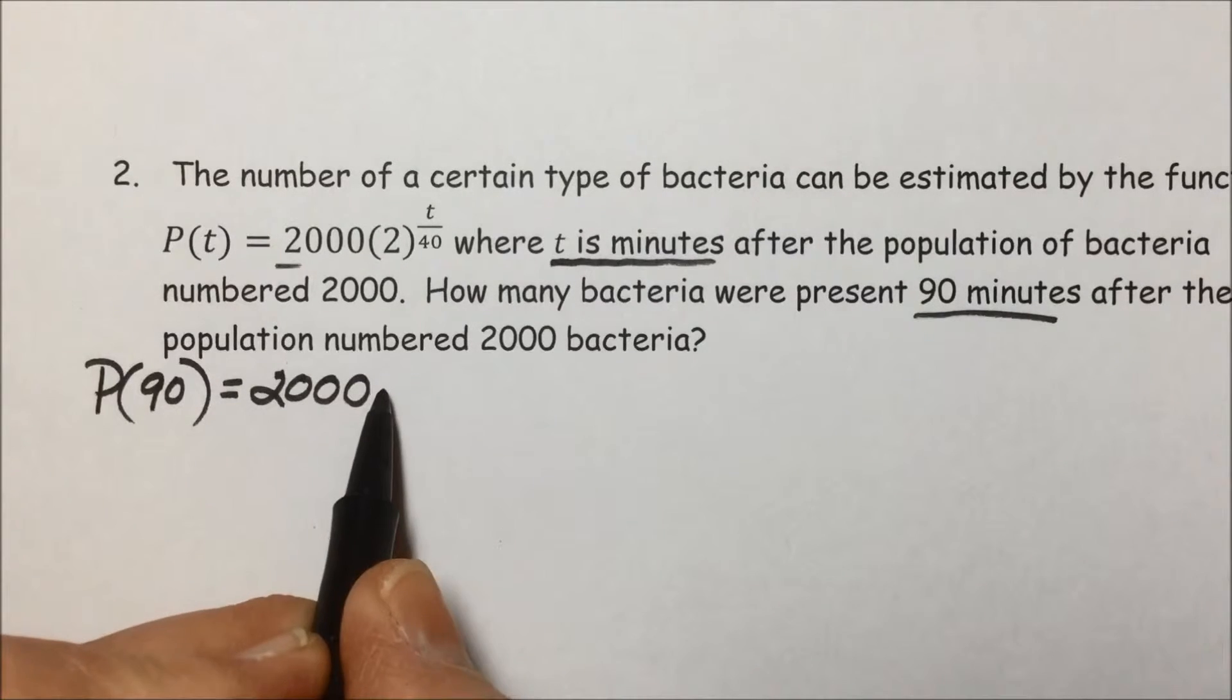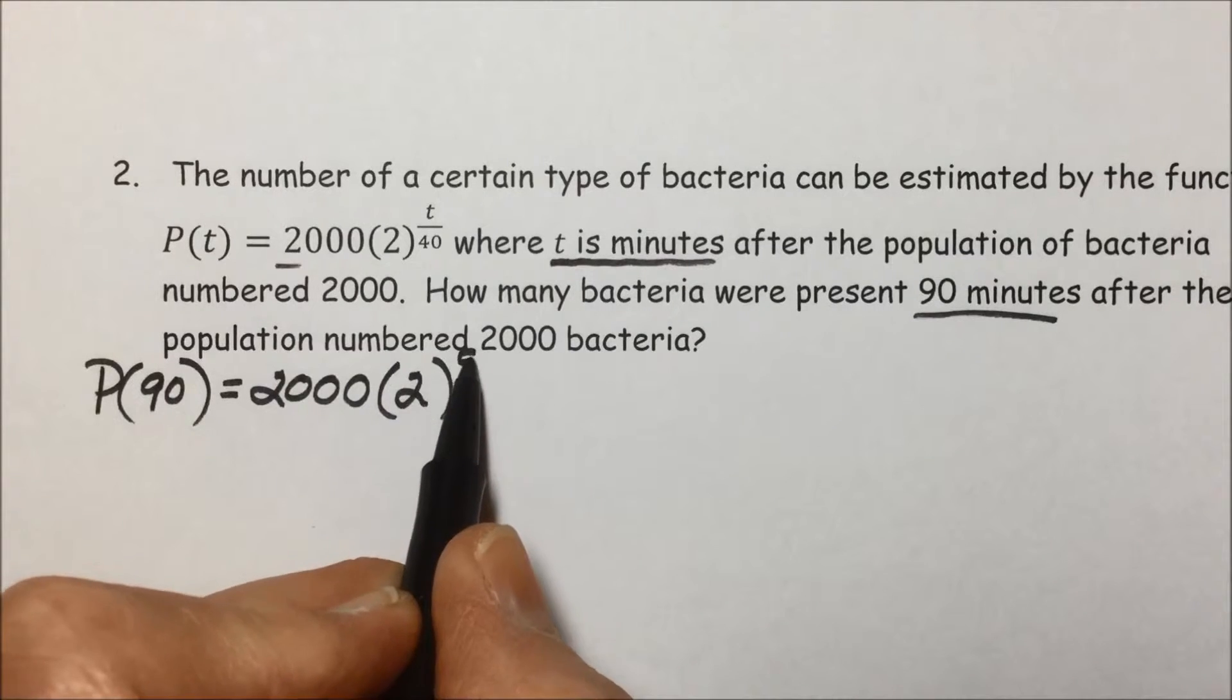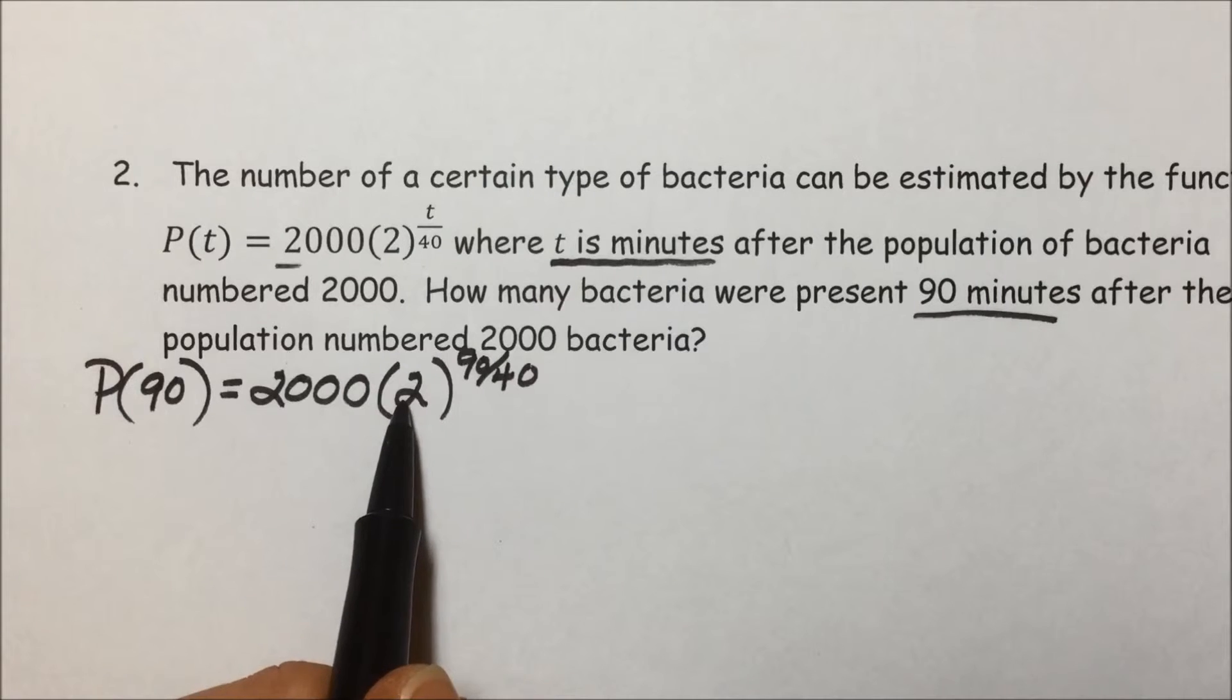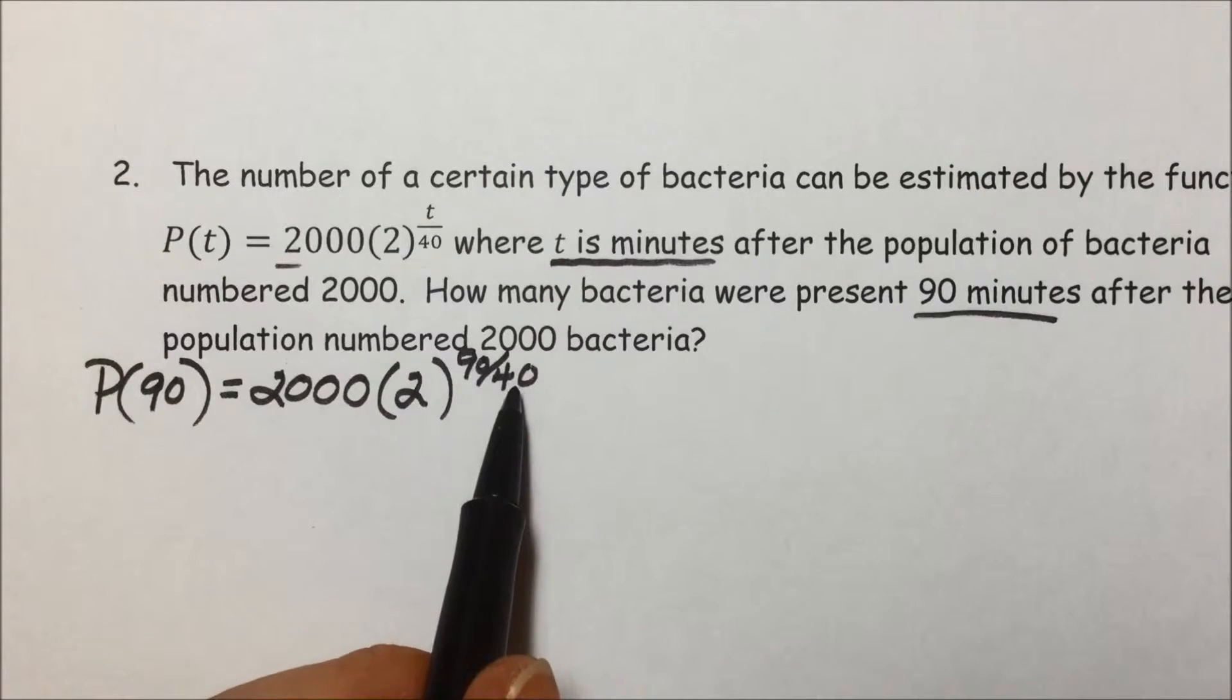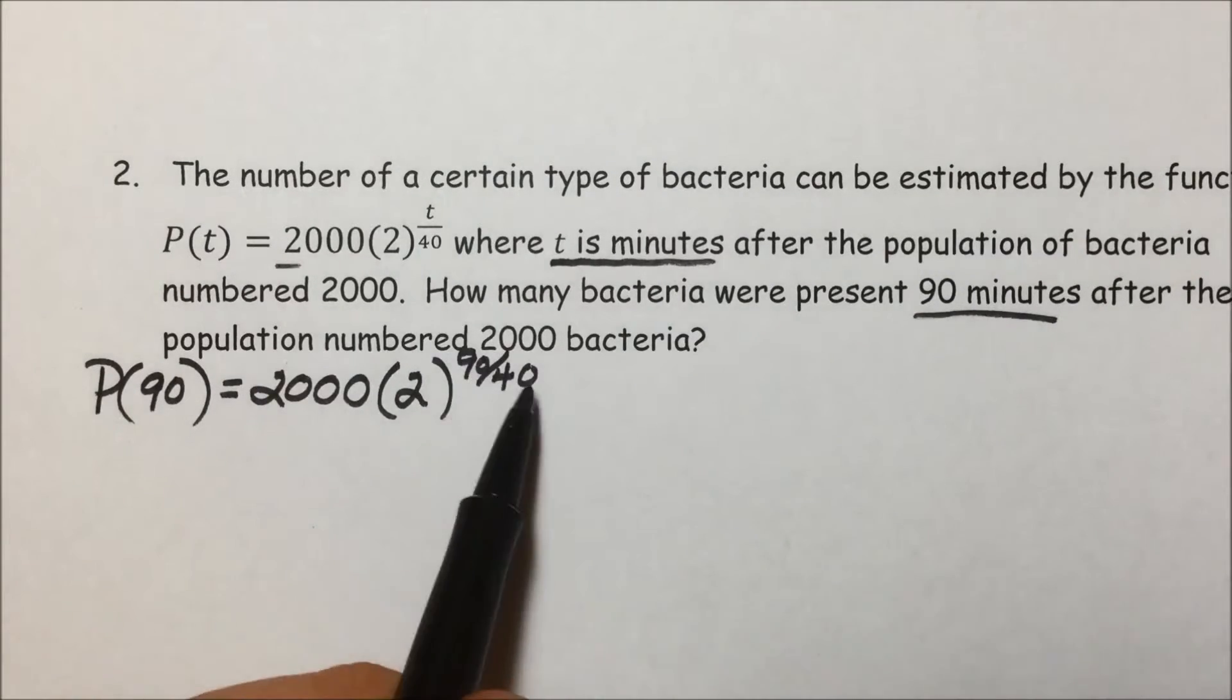So we have 2,000 times the base of 2 raised to the 90 over 40 power, which would mean we're taking 2 to the 90th power and then taking the 40th root of that. Sounds a little intimidating, and given it's a fraction,